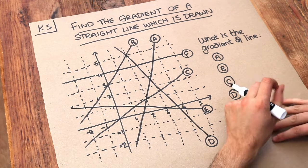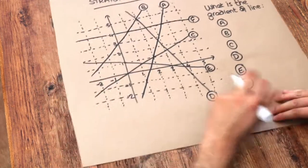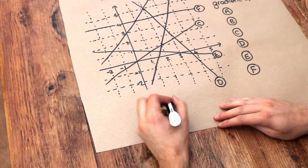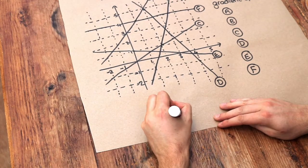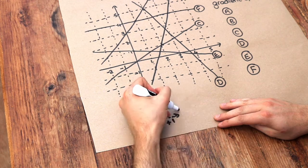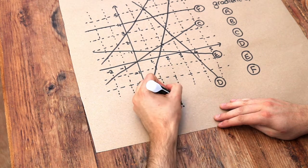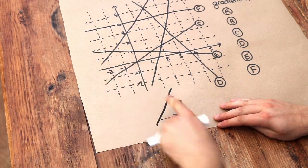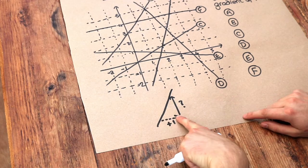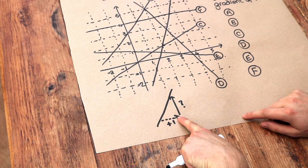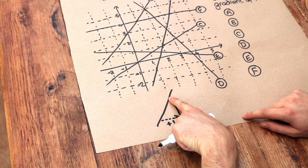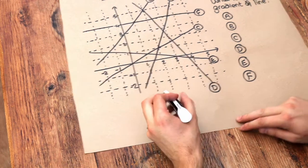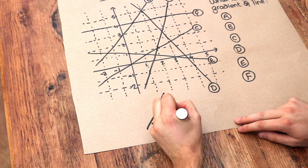Now gradient just means how steep a line is, and more specifically it means for each one that x increases by, what is the y value changing by in order to get back to the line. So each time we go one across, one to the right, what do we have to go up or down by in order to get back to the line, and whatever that number is will be the gradient.